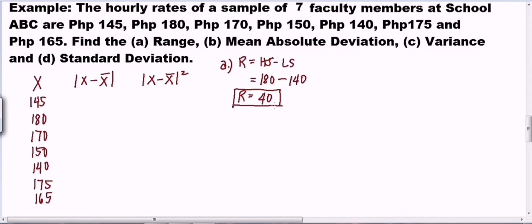Even without a table you can answer the range — it's that simple: highest score minus lowest score. However, for mean absolute deviation, variance, and standard deviation, it's better to have a table so the values are easier to understand.